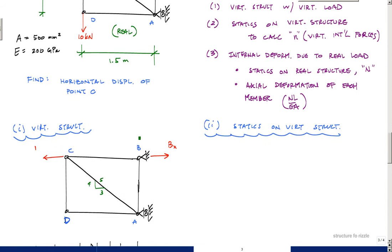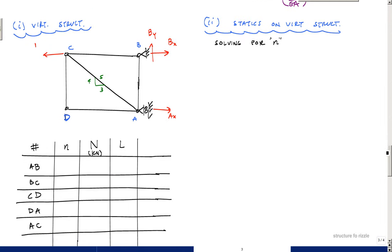I've already drawn the virtual structure with a horizontal unit load at point C, since that's where I want to find the horizontal displacement. There are reactions By and Ax. Taking moments about point A gives Bx equals 1. Summing forces in the vertical gives zero, and summing forces in the horizontal gives Ax equals zero as well.